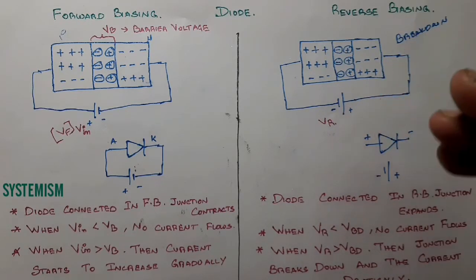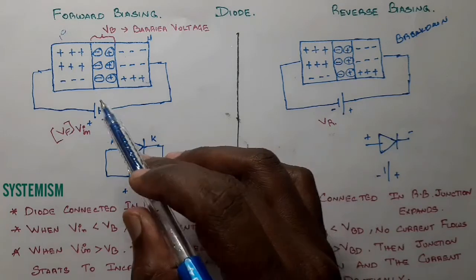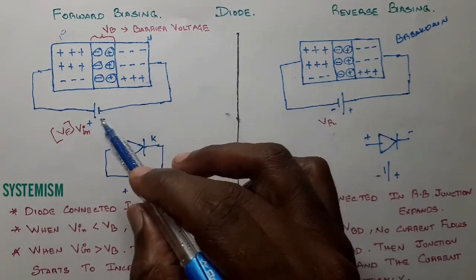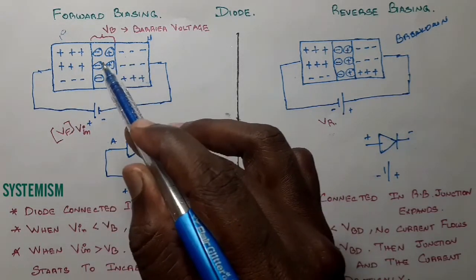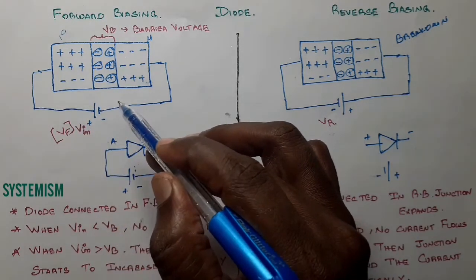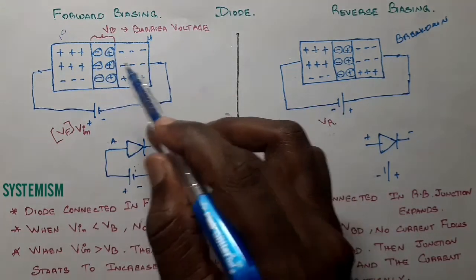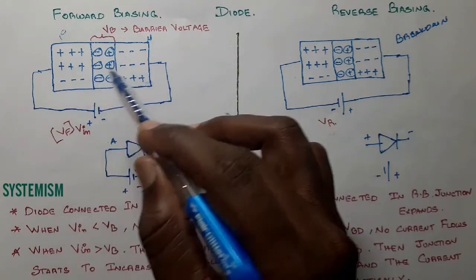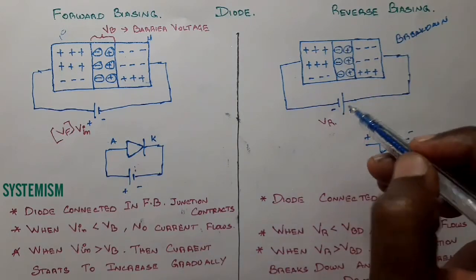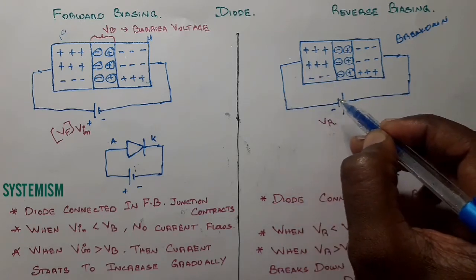To summarize: in forward bias, P-type is connected to the positive terminal and N-type to the negative terminal. The electrons and holes are pushed towards the junction; when the forward voltage exceeds the barrier voltage, the barrier breaks down and current starts increasing gradually.